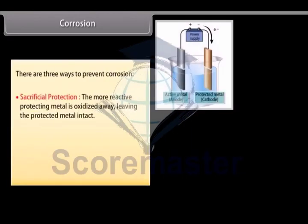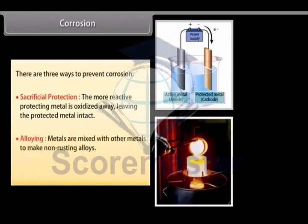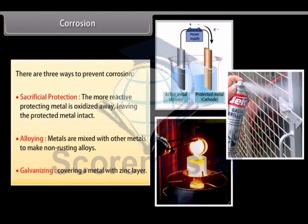There are three ways to prevent corrosion. Sacrificial protection where the more reactive protecting metal is oxidized away, leaving the protected metal intact. Alloying where metals are mixed with other metals to make non-rusting alloys. Galvanizing where a metal is covered in thin zinc layer. This layer is produced by electrolytic deposition.